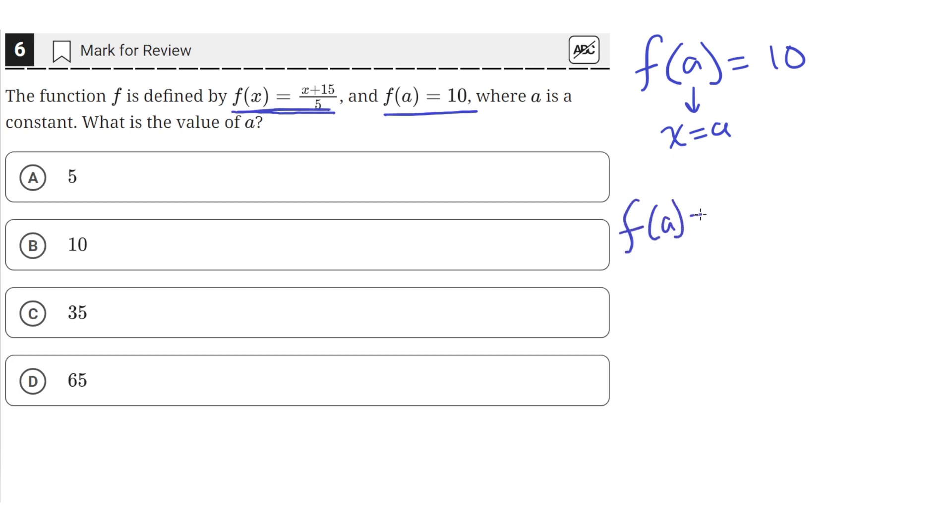So that means f of a equals a plus 15 over 5. And we're given that f of a equals 10. So now we can solve for the value of a.